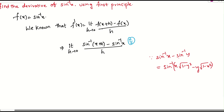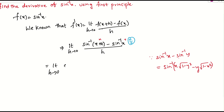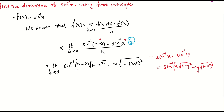So now let us continue. This is our first term and this is our second term. This is our x, and this is our y. Applying the same formula, we get: limit h tends to 0, sine inverse of — x plus h into root of 1 minus x square, minus x into root of 1 minus x plus h whole square — by h.